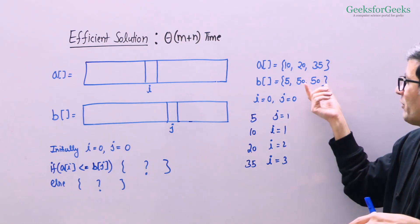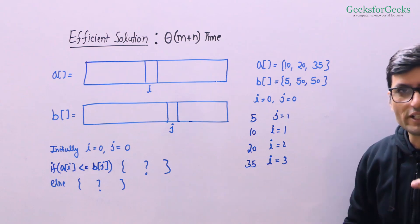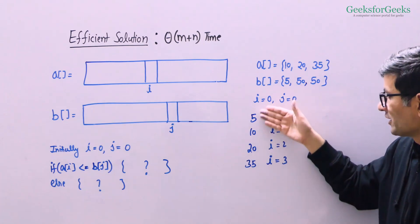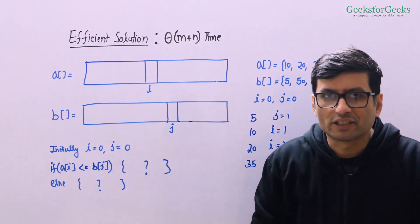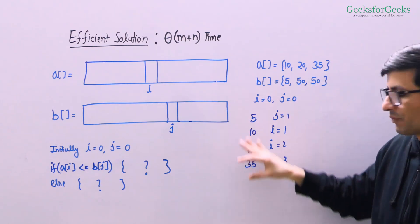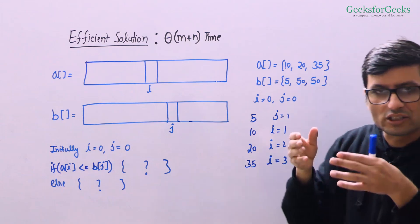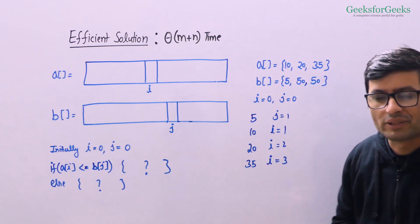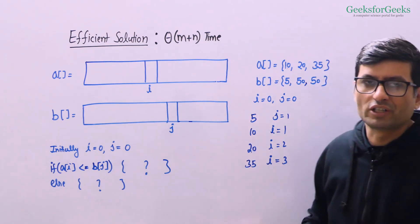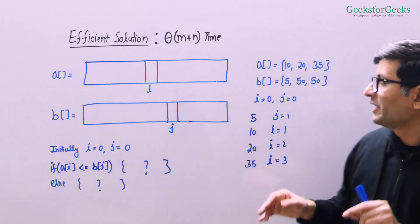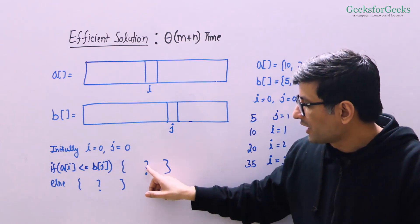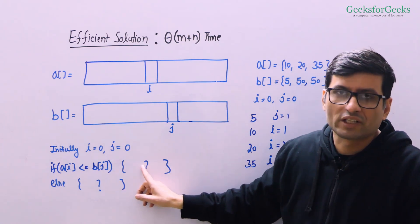We stop at this point but have not processed the two remaining elements yet. The idea is: once you have traversed both arrays simultaneously and printed some elements, whatever remaining elements exist will always be greater than the already-printed elements. Since both arrays are sorted, whatever array has remaining elements, those elements are also sorted and greater than what has already been printed. So you simply run a loop to print the remaining elements. Now please pause this video and try to write the complete code.